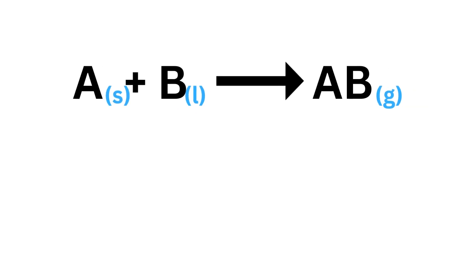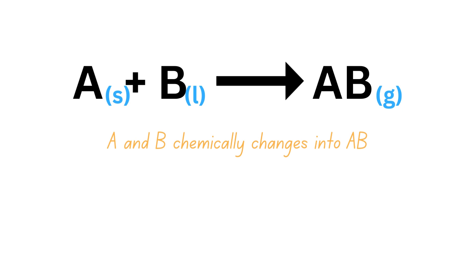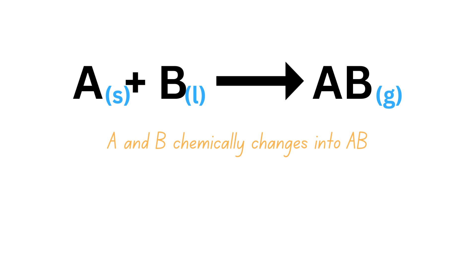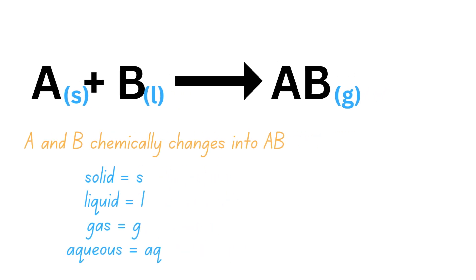A reaction equation shows the chemical change that occurs during a reaction, using the symbols of the elements involved. It also states the states of all substances present: solid (S), liquid (L), gas (G), or aqueous solution (AQ).